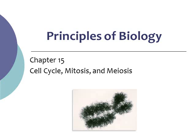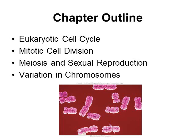Welcome to part 3 of 4 on chapter 15. In this chapter we're looking at the cell cycle, mitosis, and meiosis. In the first part we talked about the eukaryotic cell cycle that included interphase, which is divided into G1, S, and G2, and then we talked about mitosis in the second part. This third part we're going to look at meiosis and sexual reproduction.